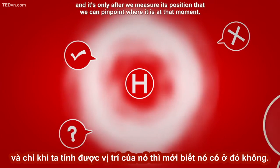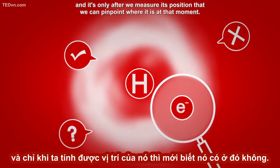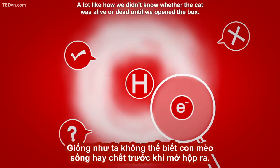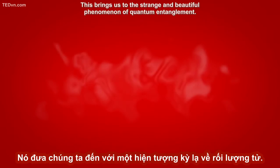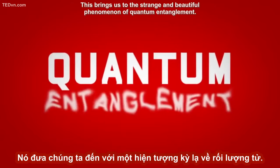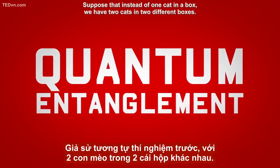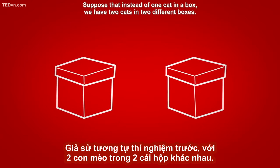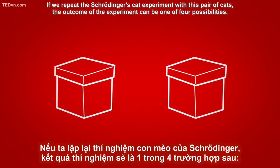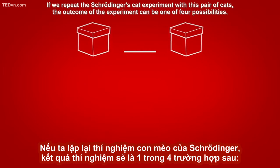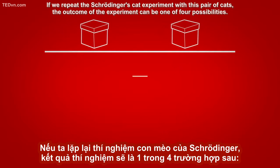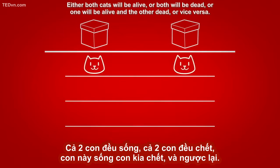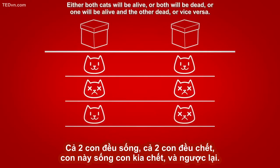It's only after we measure its position that we can pinpoint where it is at that moment — a lot like how we didn't know whether the cat was alive or dead until we opened the box. This brings us to the strange and beautiful phenomenon of quantum entanglement. Suppose that instead of one cat in a box, we have two cats in two different boxes. The outcome of the experiment can be one of four possibilities: either both cats will be alive, or both will be dead, or one will be alive and the other dead, or vice versa.